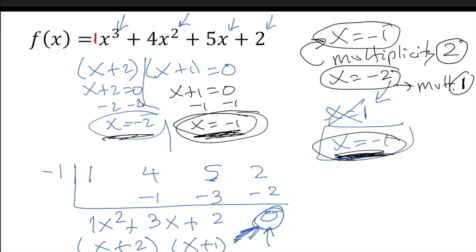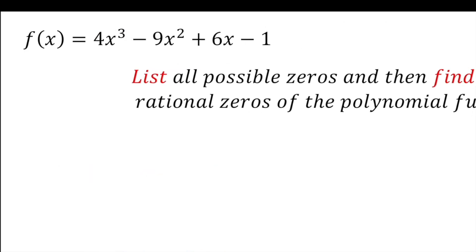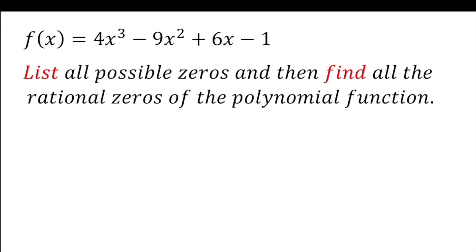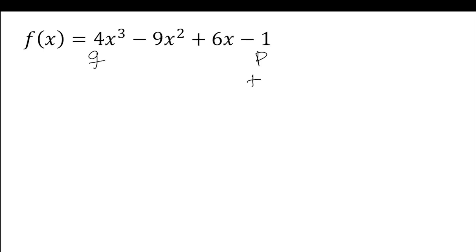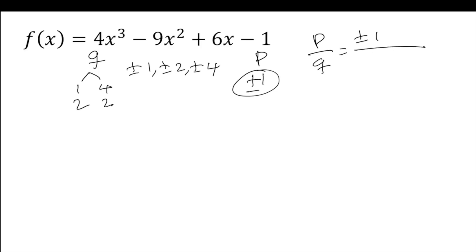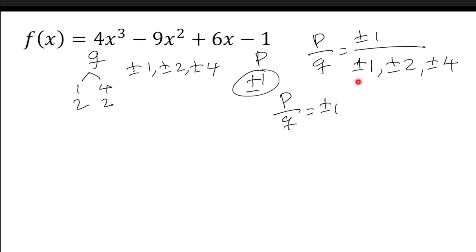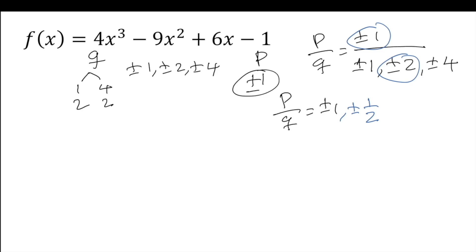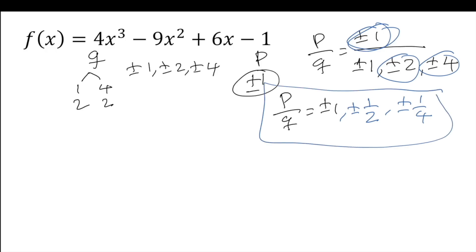Now let's do a slightly more complicated one. Same idea: list all the zeros and find the real zeros — imaginary zeros will be in a different video. For P over Q: factors of 4 are 1×4 and 2×2, so P is ±1, ±2, ±4. Q also has factors ±1, ±2, ±4. Dividing P by Q: 1÷1=1, 1÷2=½, 1÷4=¼. Those give me the list of possible zeros including fractions.